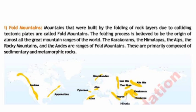Page 25. Fold Mountains: Mountains that were built by the folding of rock layers due to colliding tectonic plates are called fold mountains. The folding process is believed to be the origin of almost all the great mountain ranges of the world - the Karakorams, the Himalayas, the Alps, the Rocky Mountains, and the Andes are ranges of fold mountains. These are primarily composed of sedimentary and metamorphic rocks.